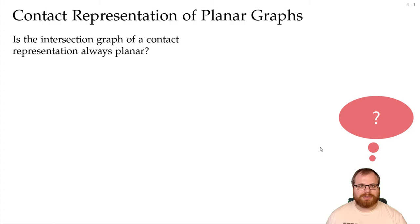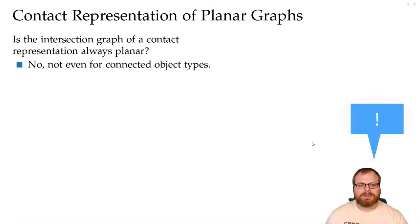What about the other direction? Is the intersection graph of a contact representation always planar? What do you think? No, it's not. Not even if all our sets are connected. For example, if we take these polygons here, that all touch in a single point in the middle, then this gives us the complete graph K5. And we all know that the K5 is not a planar graph.